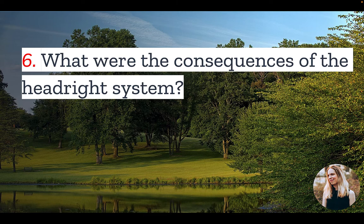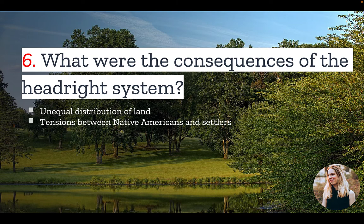Number six: what were the consequences of the head right system? The head right system was originally supposed to entice people to bring over laborers and settle the colony, however the impacts rippled far beyond that. Many head rights ended up accumulating in the hands of one or a few individuals, as the wealthiest members of the colonies would pay to bring lots of laborers over and keep all the head rights associated with those individuals. It also increased tensions between indigenous tribes and colonists, because individuals were often granted land in regions bordered by native tribes. Finally, in many instances the system was characterized by lack of oversight and, in some instances, outright fraud — and in many cases more head rights were distributed than there was land available.